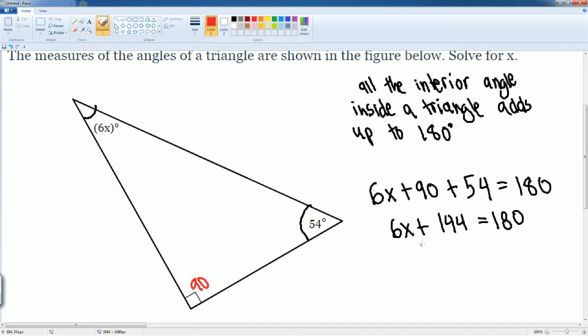Then we can subtract the 144 to both sides. We get 6x. This cancels is equal to 180. Subtract 144 becomes 36. Then we can divide by 6 to both sides. Then you get x is equal to 6.